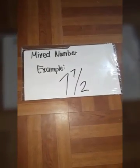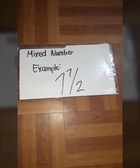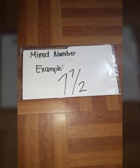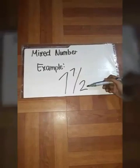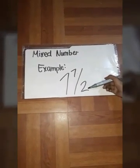1 and 1 half is a mixed fraction, also called a mixed number. 1 is our whole number, and the other is our numerator. And this 2 is our denominator.